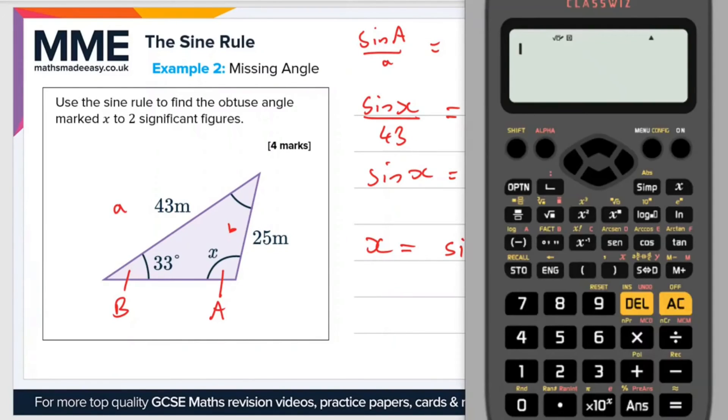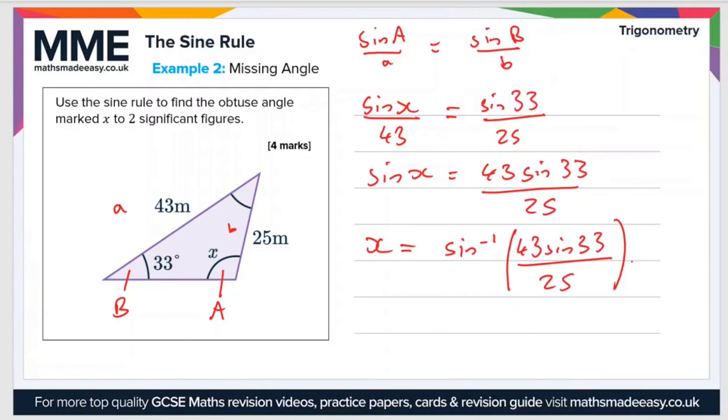If we put that into a calculator, we get sine to the minus 1 of 43 sine 33. Remember to close the brackets, divided by 25, and that gives us a value of 69.5, or 70 to two significant figures. So that equals 70 degrees.